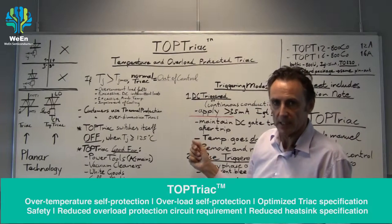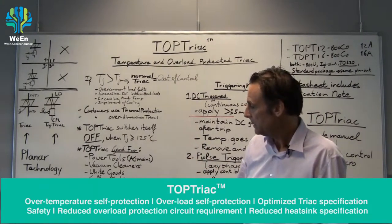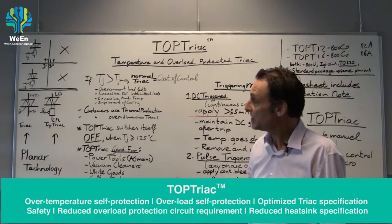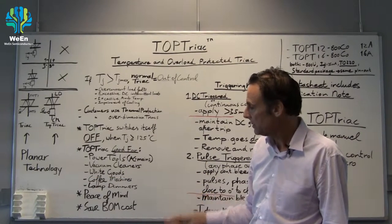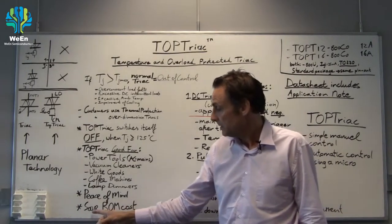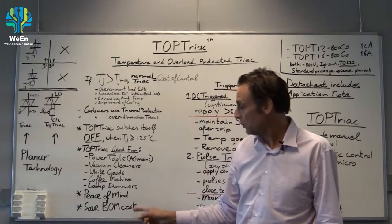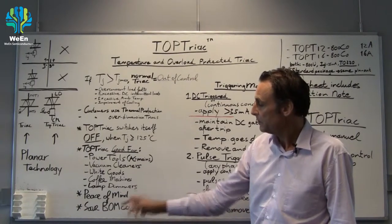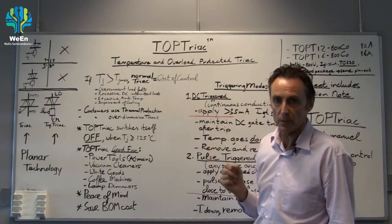By using a TOP TRIAC a customer has peace of mind because nothing can go on fire. The TOP TRIAC will switch itself off when it gets too hot, and the customer can also save on the cost of bill of material because you no longer need to buy protection components.